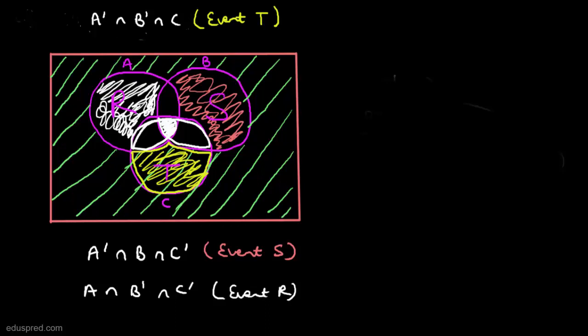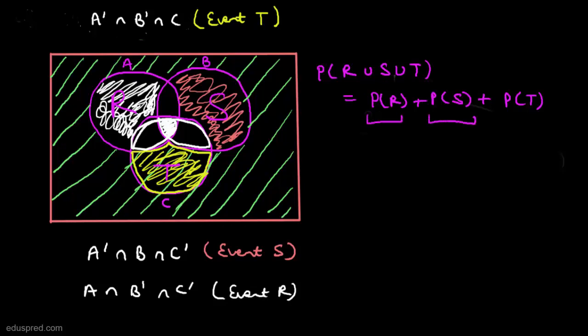Events R, S, and T are mutually exclusive, so P(R ∪ S ∪ T) = P(R) + P(S) + P(T). We already found P(T) = 0.22 in part C. Now we need to find P(R) and P(S) using the same Venn diagram approach.